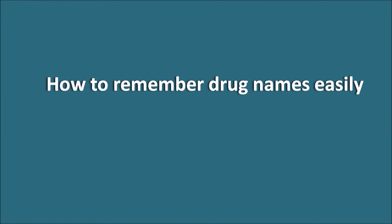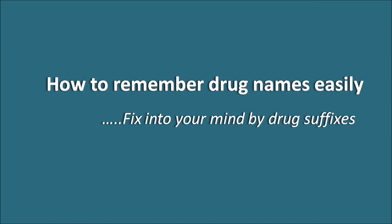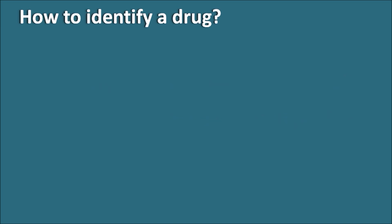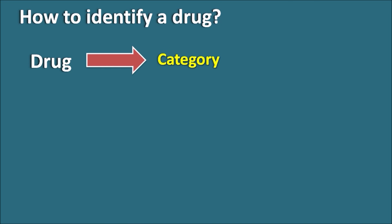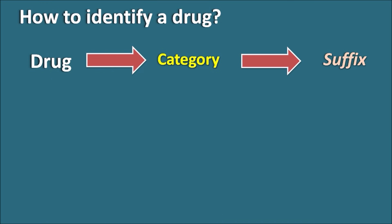How to remember drug names easily? Let us fix into your mind the drug suffixes, and how to identify a drug. Suppose we have a drug that belongs to a particular category, and this category may have a unique suffix. So if you know the suffix, you can know the category and remember the drug. By remembering the suffixes, you can easily identify the category and what are the drugs in that particular category.